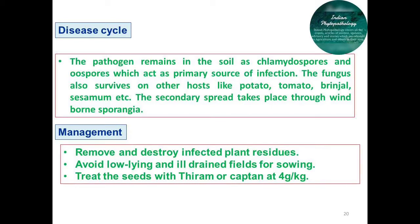For management of this Phytophthora blight of castor, you have to remove and destroy infected plant debris or plant residues that are responsible for survival of this pathogen. Similarly, we have to apply fungicidal solution near the basin, that means near the root surface, so that oospores or any other resting spores or sporangia present inside the soil will get killed due to this solution.